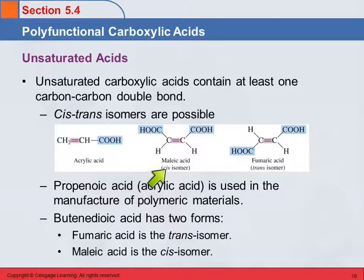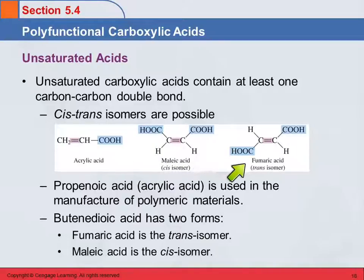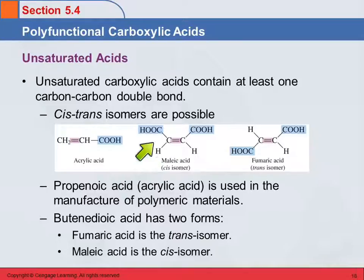For this dicarboxylic acid, we do have isomers. This one's called maleic acid and this one's called fumaric acid. This is an unusual situation where the cis-trans isomers have different common names. On maleic acid, the hydrogens are on the same side of the carbon-carbon double bond, and on fumaric acid they are on the opposite side — that's the trans isomer.